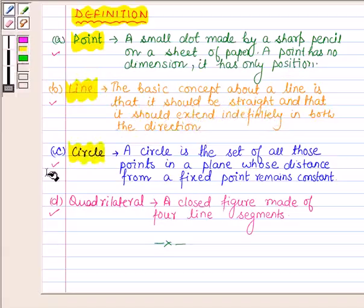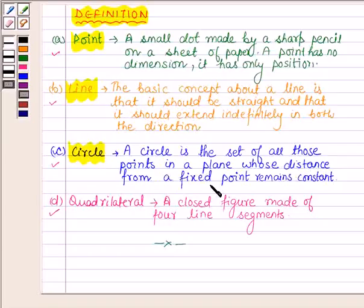The third definition is of a circle. A circle is the set of all those points in a plane whose distance from a fixed point remains constant. And the last one is quadrilateral, and it is a closed figure made of four line segments. So these are some definitions with the help of which we will define the given five terms.